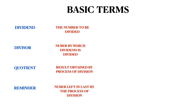The basic terms in division are dividend, divisor, quotient, and remainder. Dividend is the number to be divided. Divisor is the number by which the dividend is divided. Quotient is the result obtained by the process of division, and remainder is the number left over at the end of the process of division.